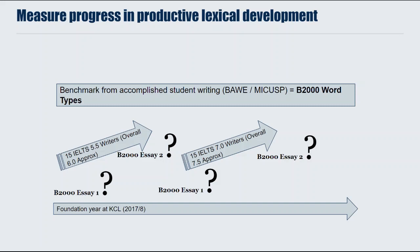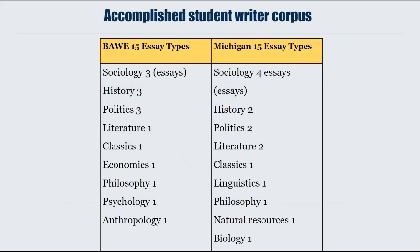I would say it was a programme that prioritises study skills over language and is targeted at lots of authentic texts rather than very graded language. So I had fifteen essays from Bohr and fifteen from Michigan that roughly reflected the argument genre of essays. They were all first-year essays, all had a merit or distinction.